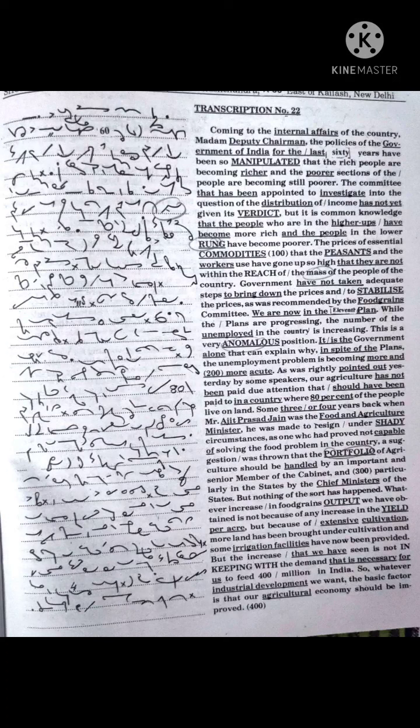The prices of essential commodities that the peasants and the workers use have gone up so high that they are not within the reach of the mass of the people of the country. Government have not taken adequate steps to bring down the prices and to stabilize the prices as was recommended by the Food Grains Committee.